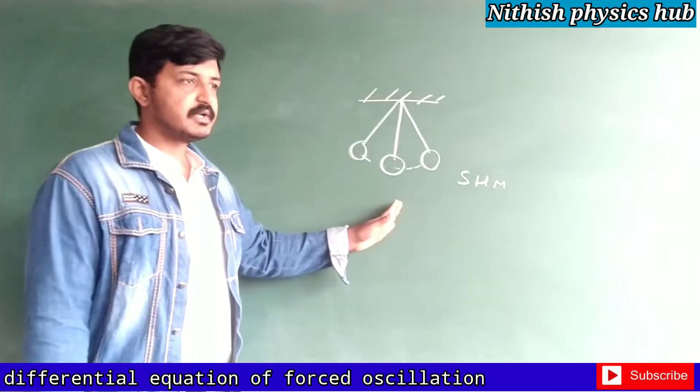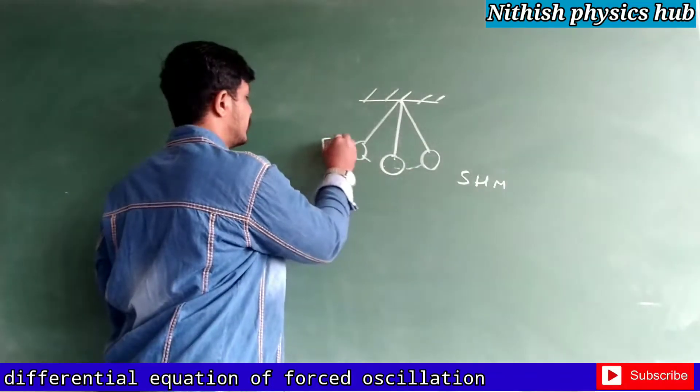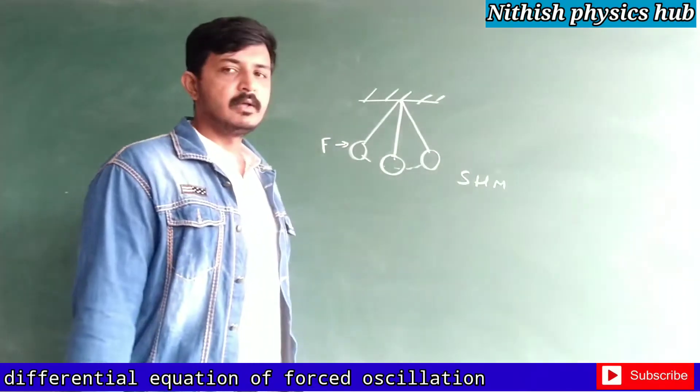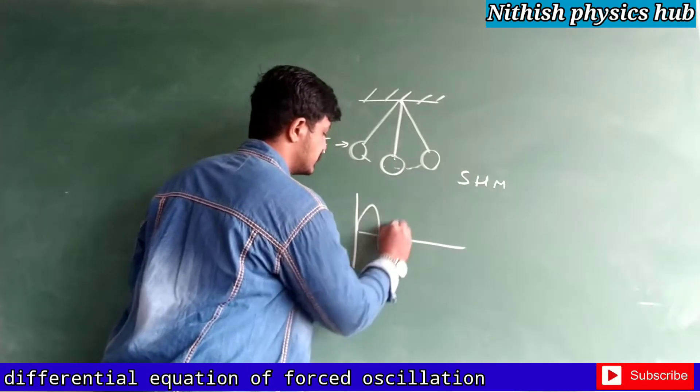Whenever this is coming to the halt position, by externally the person or any force applied on a body, then the body gets re-oscillated. The wave pattern will be like this - the damped oscillation is reducing amplitude.